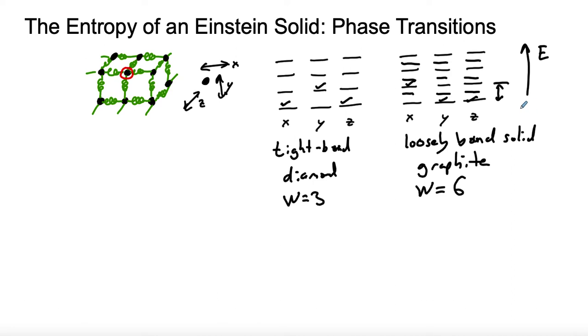So that tells us something. That tells us as we go from tight to loose, in terms of how stiff the bonding is, that we have w increase. And we know, just revisiting Boltzmann's equation for entropy, it's the natural log of w times Boltzmann's constant, that if w goes up, entropy goes up. So loosely bound substances should have higher entropy than tightly bound substance.